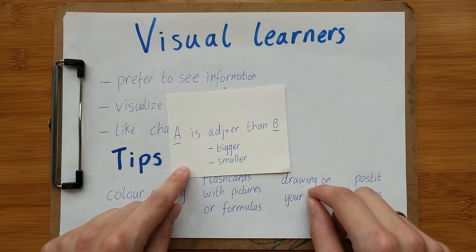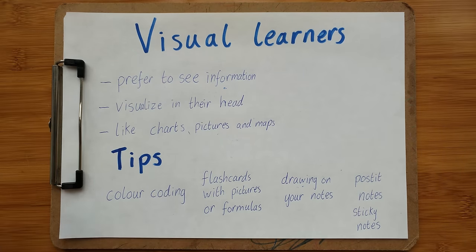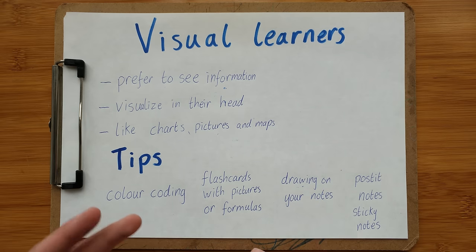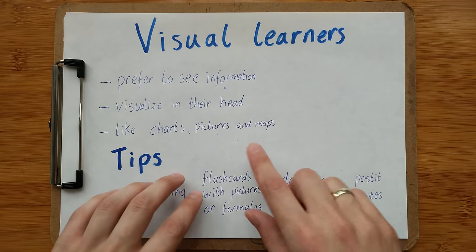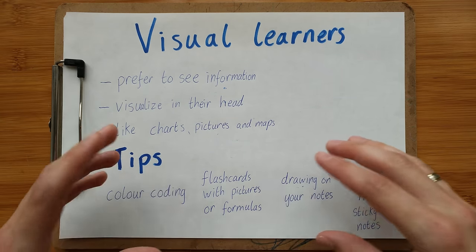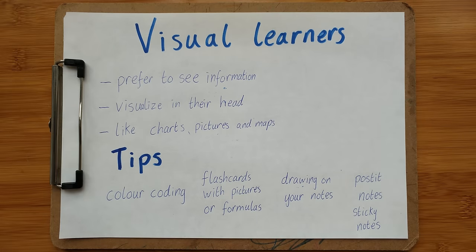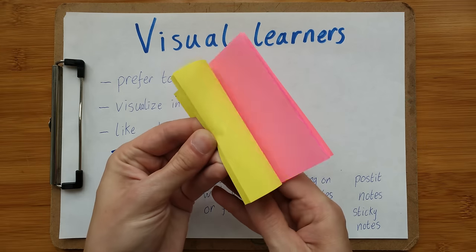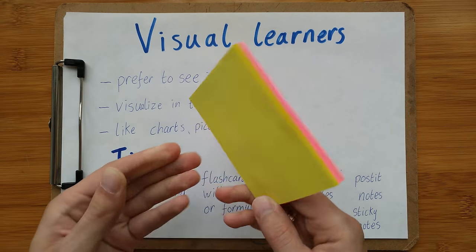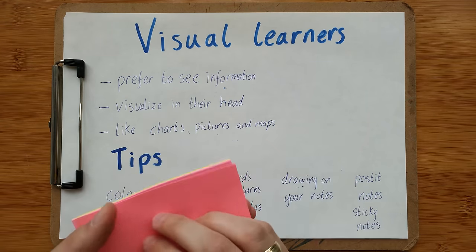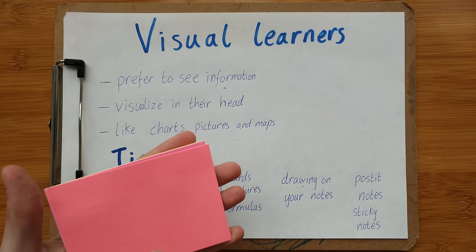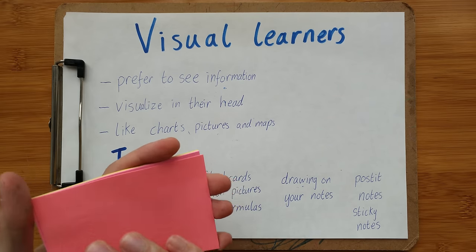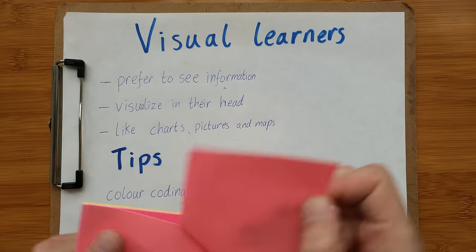You can also draw on your notes. Visual learners obviously like pictures, so drawing on your notes will help. But personally, my favorite is post-it notes and sticky notes — these are great for learning. I'll write a date, a new word, a sentence, or an important fact on them.